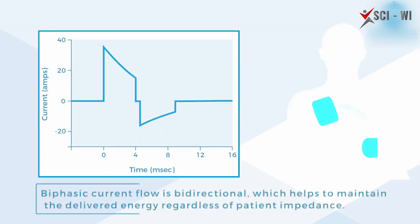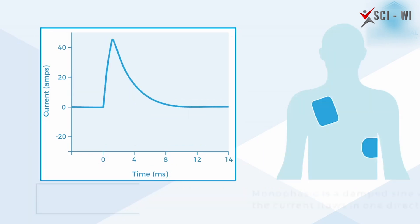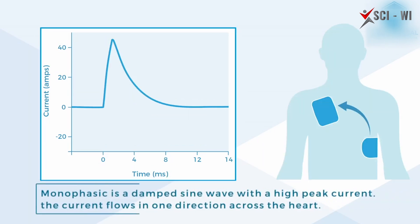In monophasic defibrillation, the voltage of the capacitor determines the energy that is delivered by the pads. The waveform linked with monophasic defibrillation has one peak, which is crucial in determining the success of defibrillation.